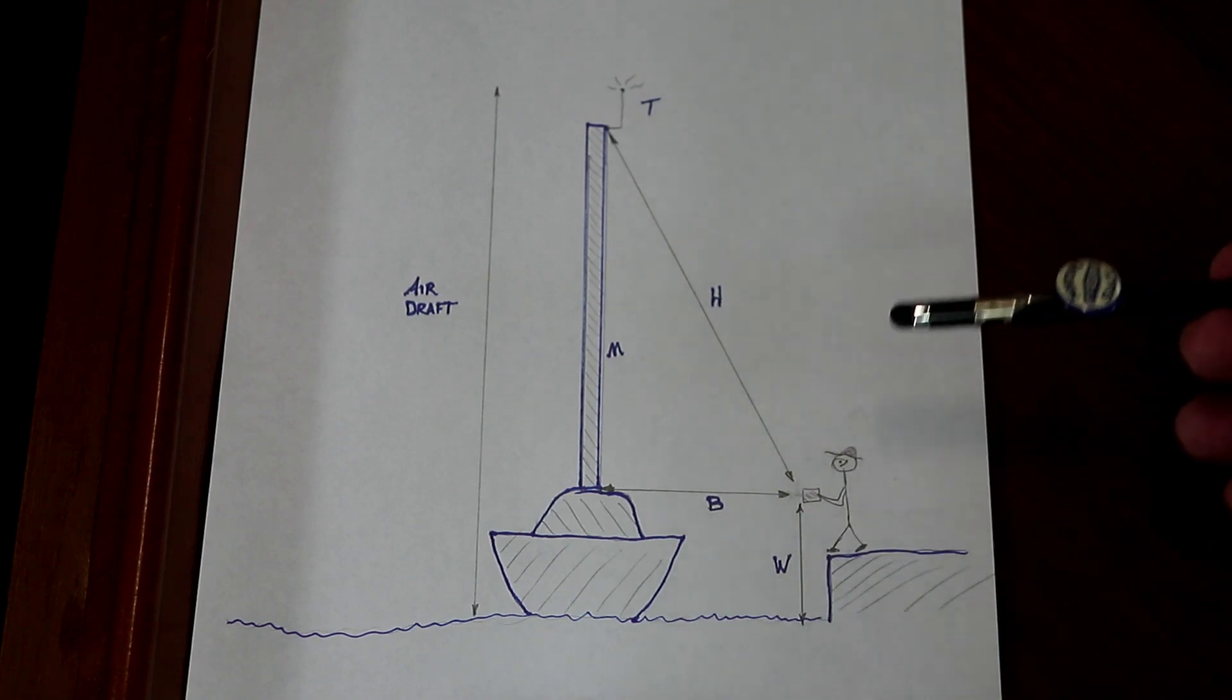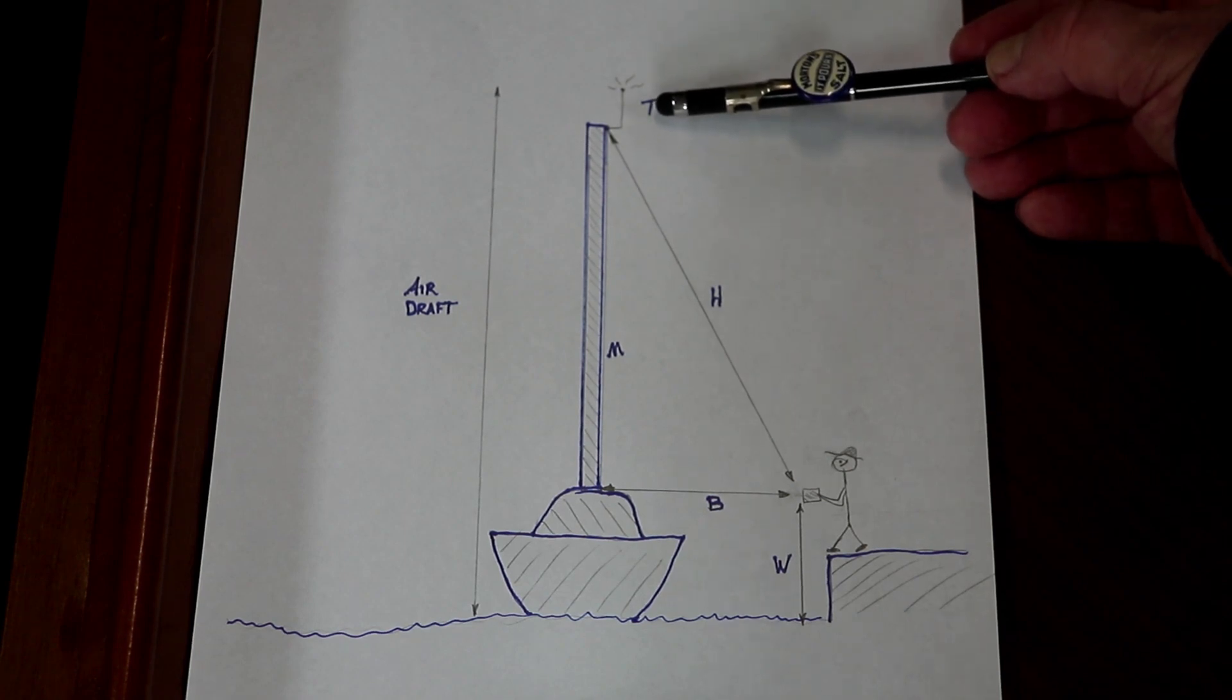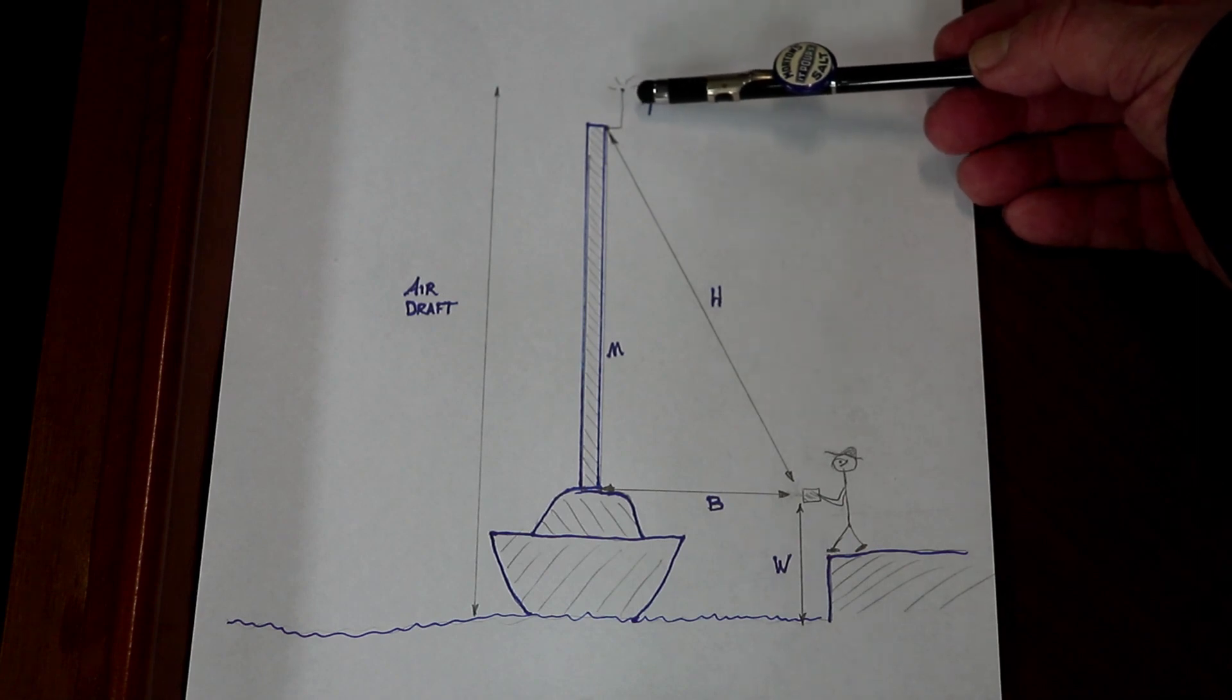The last piece we need is the length of the tallest piece of equipment that's on top of the masthead. In this case, it's the VHF antenna.